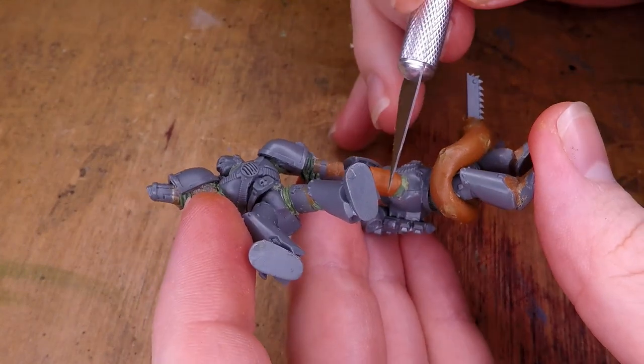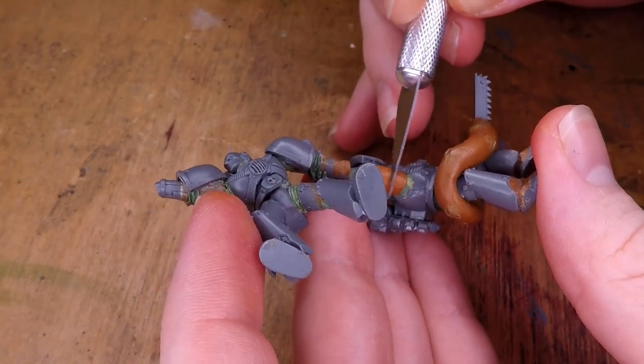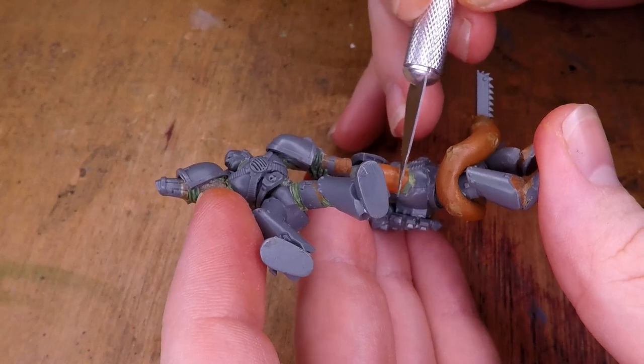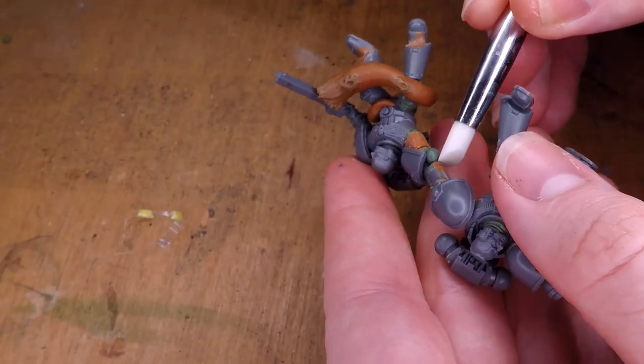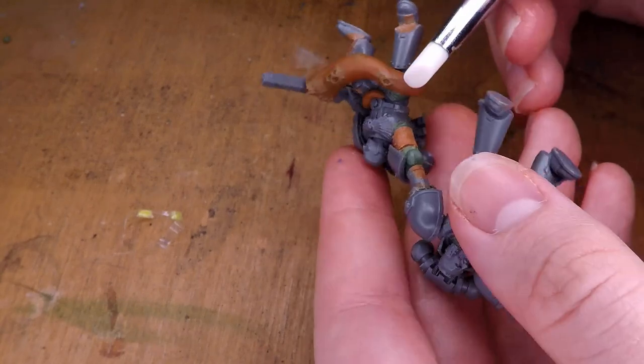I can then go over to the milliput we had added before and shave that down so the edges are nice and sharp. And as a final touch for this episode, add the hand of the first space marine.